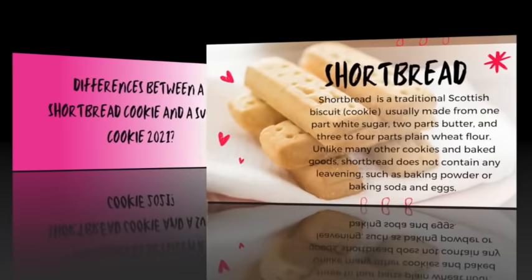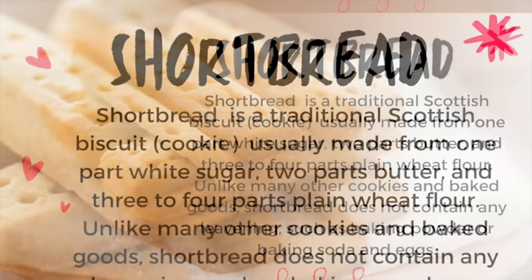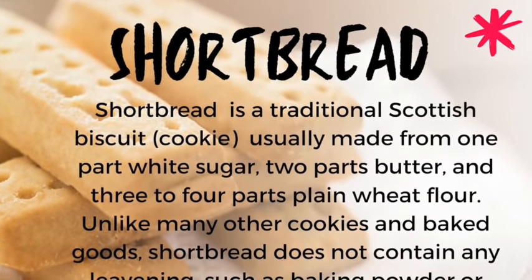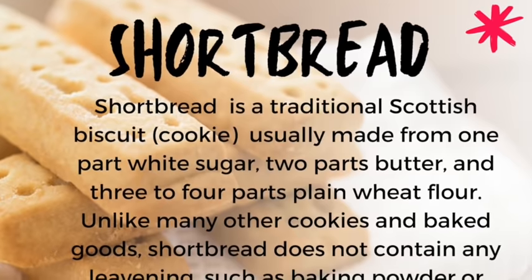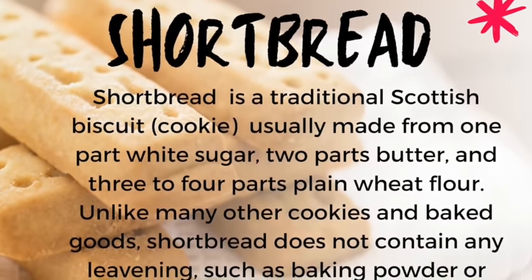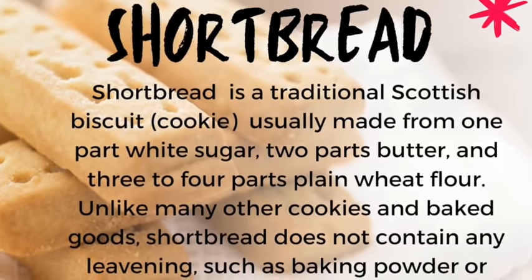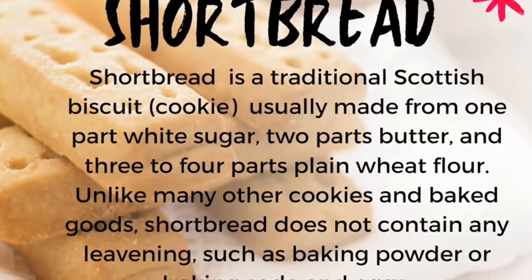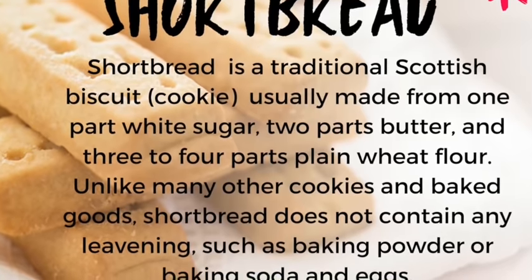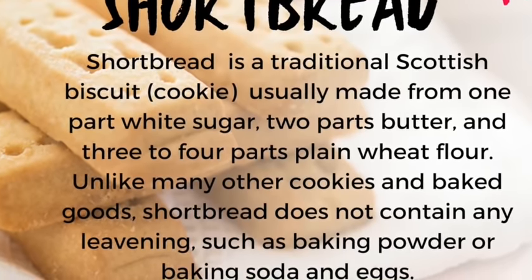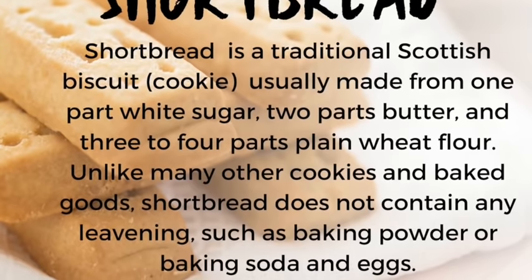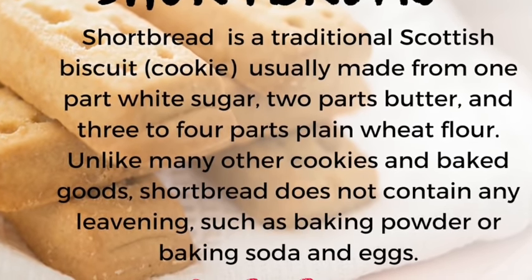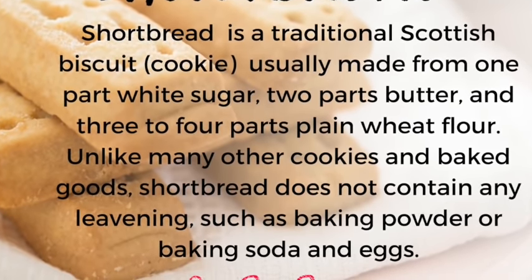First, let me tell you the definitions of each cookie. Shortbread is a traditional Scottish biscuit or cookie usually made from one part of white sugar, two parts of butter, and three to four parts of plain wheat flour. Unlike many other cookies and baked goods, shortbread does not contain any leavening agents such as baking powder or baking soda, or eggs.